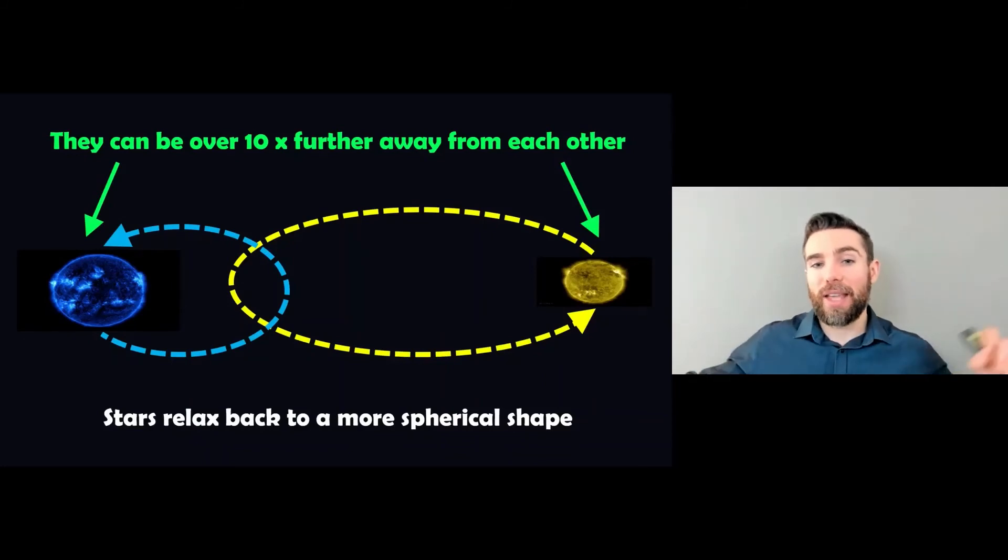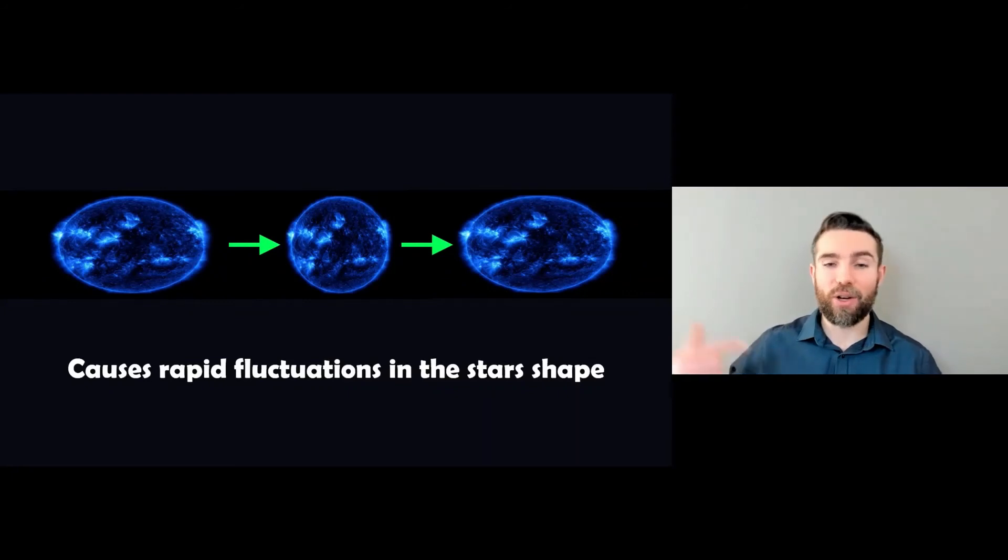Now, at the outer parts, they actually move quite a long way off because, again, they're very elliptical orbits. They get very close to each other. Then they get very far apart. So actually, at those locations, the stars relax back to a more spherical shape. So they actually become ellipsoid and then more spherical. And throughout that orbit, it causes a rapid fluctuation in the star shape. So the stars are fluctuating in shape quite rapidly and fairly significantly, enough that we can actually measure it quite well.